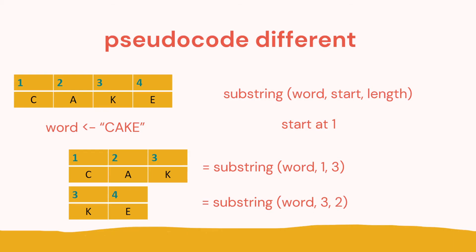Pseudocode is different for substrings — we start counting at one. For example, with the word 'cake': starting at position one and taking a length of three characters gives us C-A-K. If we want the substring starting at position three and taking two characters, that gives us K-E.